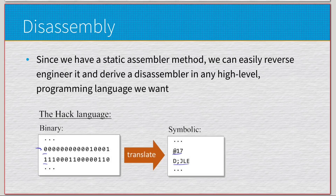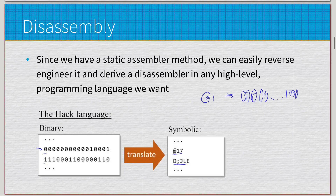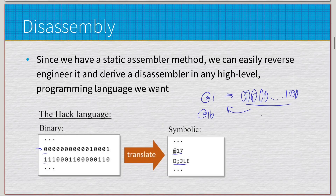One important limitation: when we have variables and labels in the symbolic language — like `@loop`, `@end`, `@i`, or `@x` — we cannot disassemble back to those label or variable names. That is all lost in translation. For example, `@i` translates to the binary form of 16; once we reach that binary, we can't go back to `@i` — what we get is `@16`. The symbolic aspect is completely lost, and this is true for reverse engineering at the high level as well.